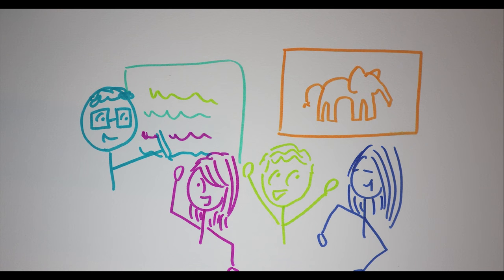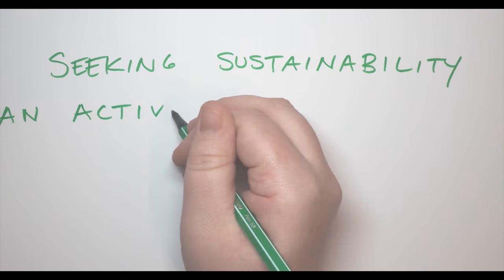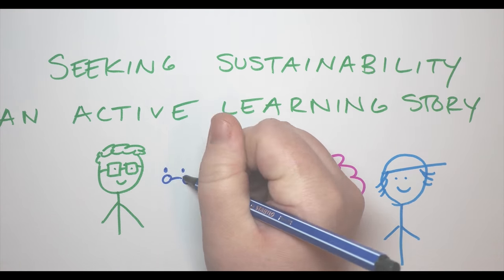So, we can see the benefits of structuring a class to allow for active participatory learning. How, then, can a classroom be structured to support the same type of learning? The new classroom building's scale-up rooms are unique spaces, and we'll talk about them in our next video. Until then, this is Seeking Sustainability, an active learning story.